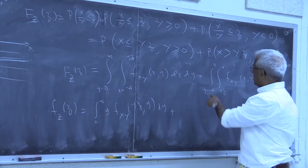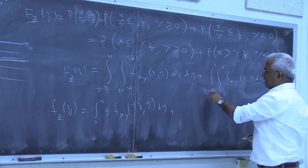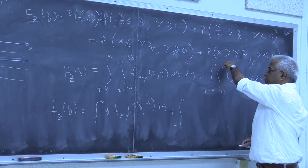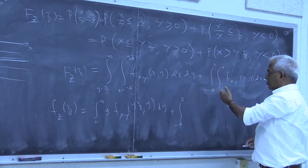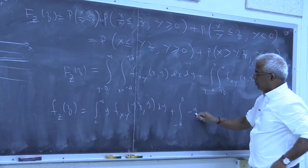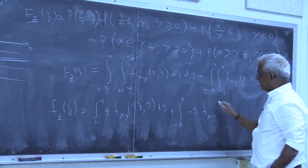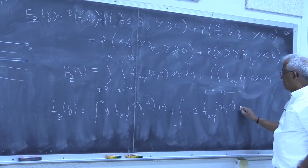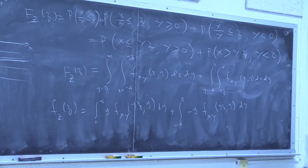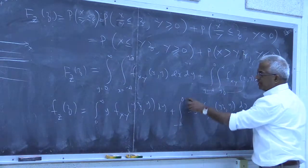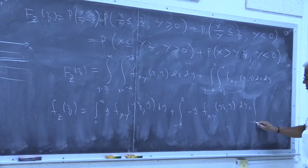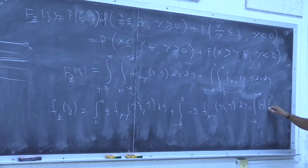For the second term, the outer limits are constant so that stays. The top limit is constant, so its derivative is zero. Minus the derivative of the bottom limit yz with respect to z is y, and we substitute yz into the integrand. Notice that in the negative-y region we get minus y, which is positive there. So we can combine both terms and write the result as the integral from minus infinity to plus infinity of the absolute value of y times f_{xy}(yz, y) dy.